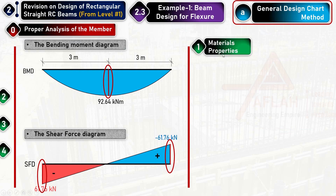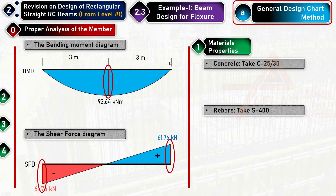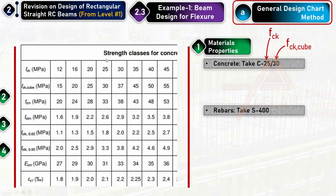Step one of the design is material properties. The concrete grade is C25/30, giving a characteristic cylindrical strength fck = 25 MPa. The design compressive strength fcd = αcc × fck / γc = 0.85 × 25 / 1.5 = 14.167 MPa.